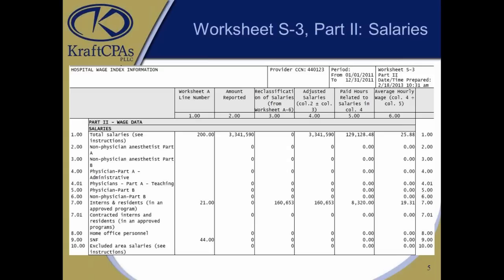This particular example is a teaching hospital, so there are certain things to consider. Line 7 includes salaries for interns and residents, the related hours, and ultimately an average hourly wage associated with that. As you can see, it's a pretty low average hourly wage — some of you not involved with teaching facilities may not realize that interns and residents do not make a lot of money.